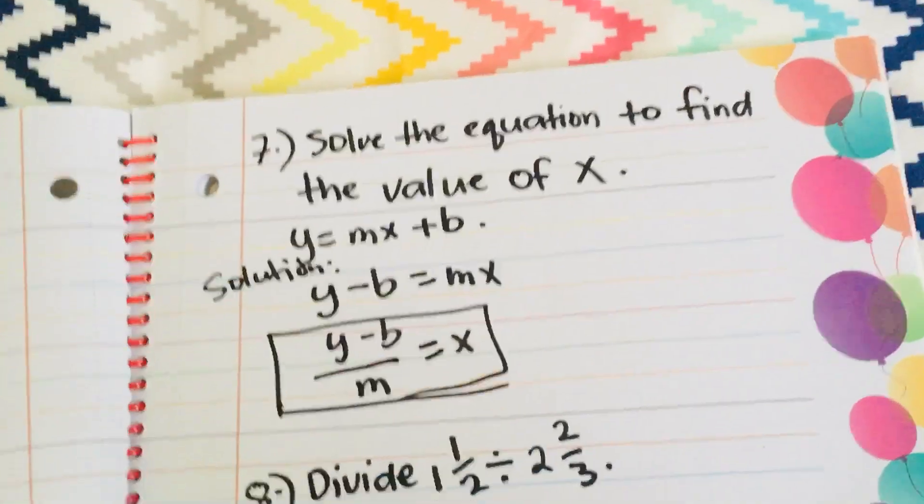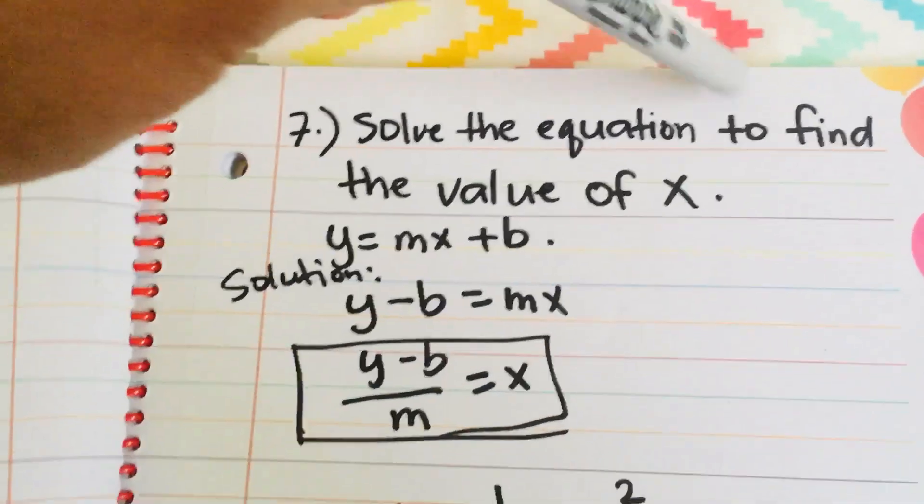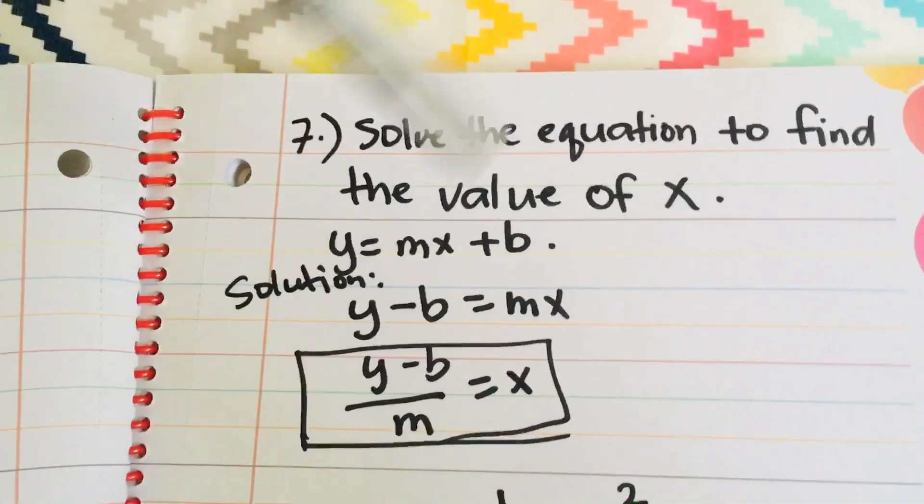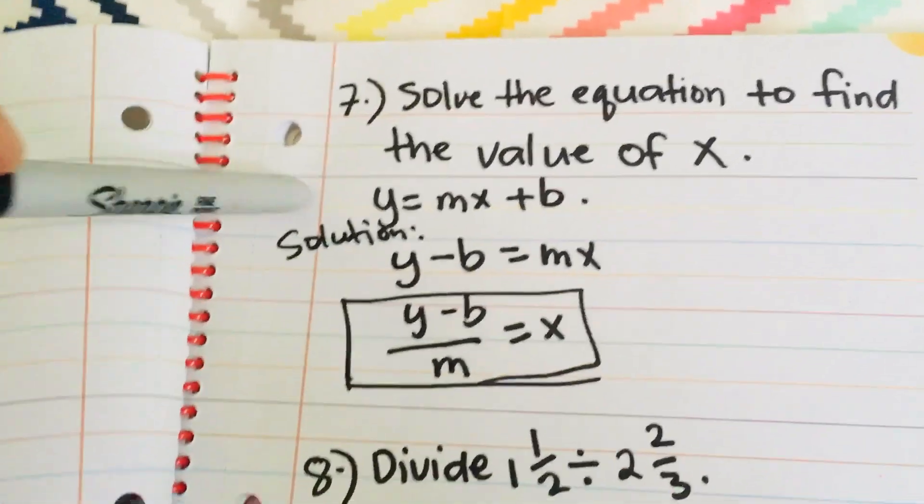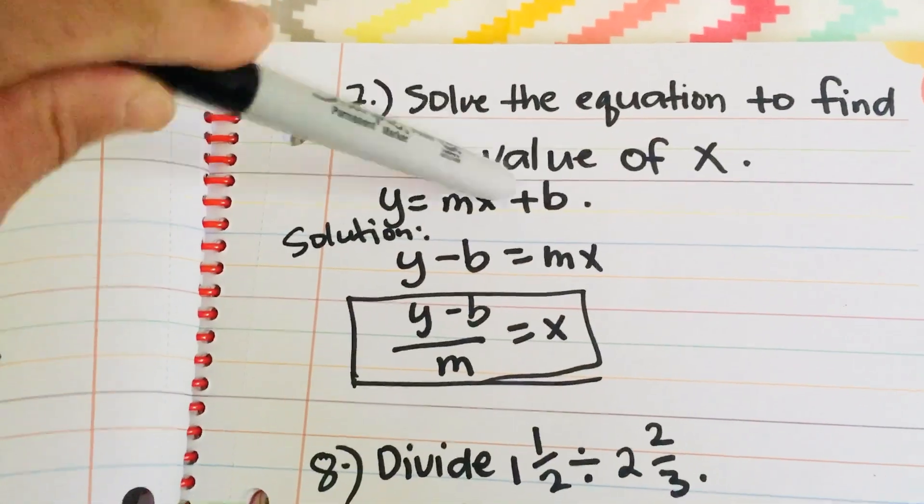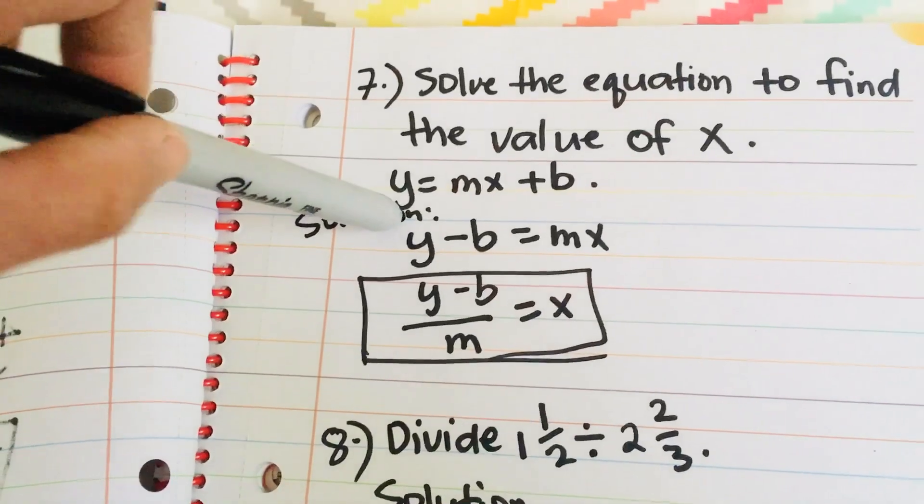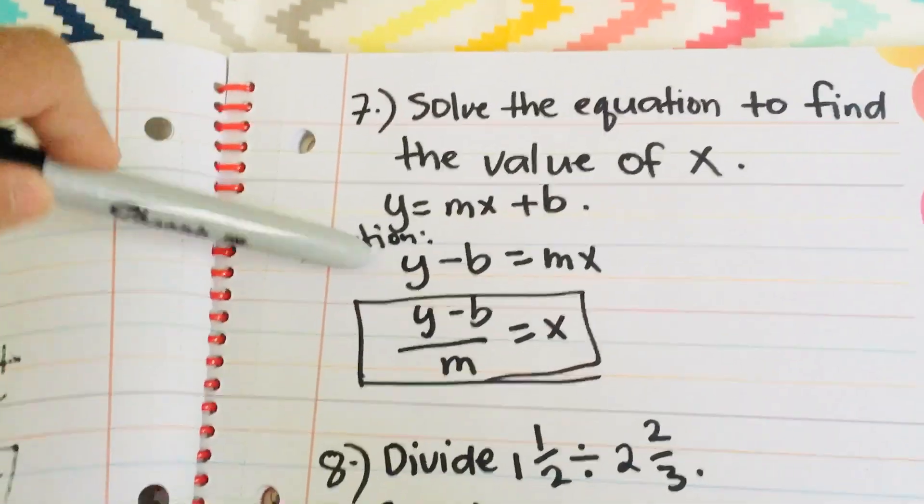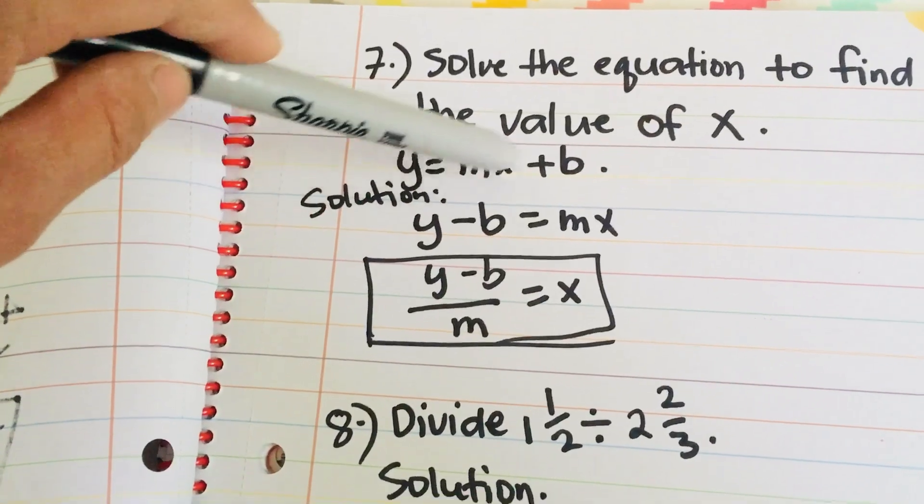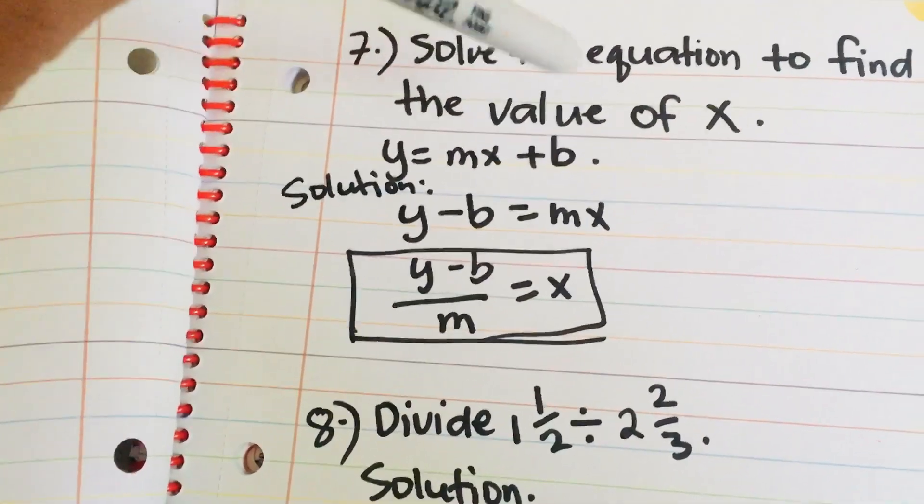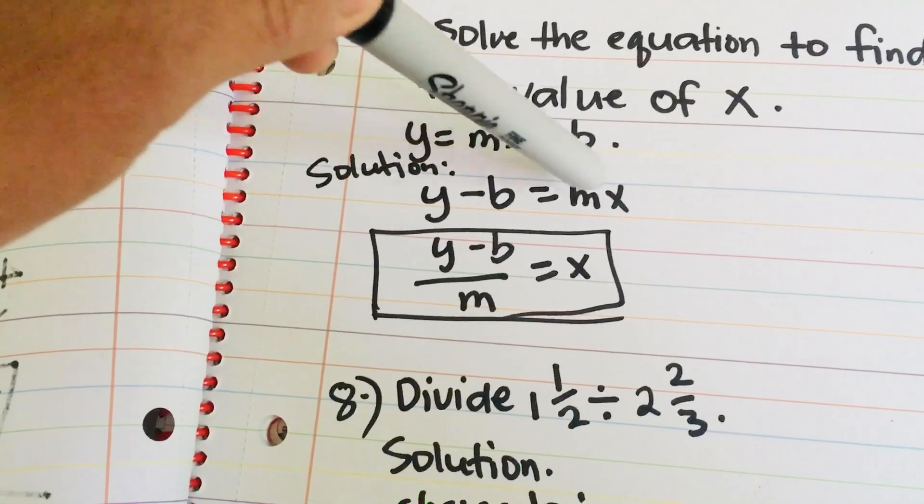Okay. Next question, number 7. Solve the equation to find the value of x. Y is equal to mx plus b. So, we want to find the value of x. First of all, you have to simplify one term. So, in here, we have y and then b on the other side. If you move it to the left, it becomes negative. So, y minus b is equal to mx.